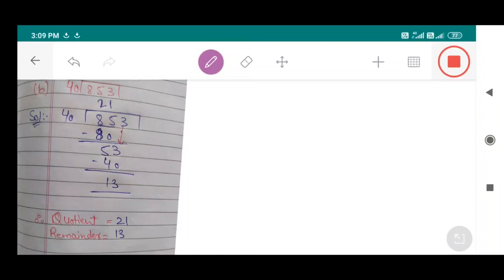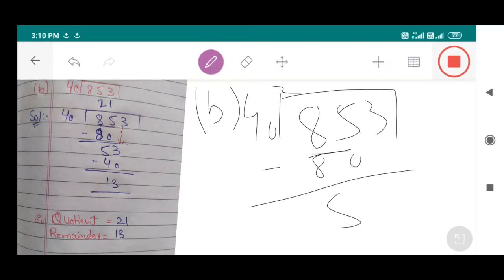Part number B: 853 divided by 40. Let's take 85, and 85 is greater than 40. 85 divided by 40: 40 times 2 equals 80. 85 minus 80 equals 5, and this 3 goes down. Now we have 53.